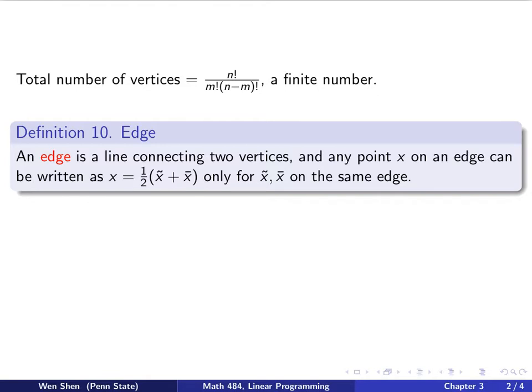And now we introduce another definition, which is an edge of your convex set. So an edge is a line connecting two vertices, and any point, let's call it x, on an edge, can be written as the midpoint of two other points, x tilde and x bar, and it can be written as this only for x tilde, x bar, also on the same edge, and that's the definition. So an introduction of an edge will be important, and later we'll make the connection to the simplex algorithm.